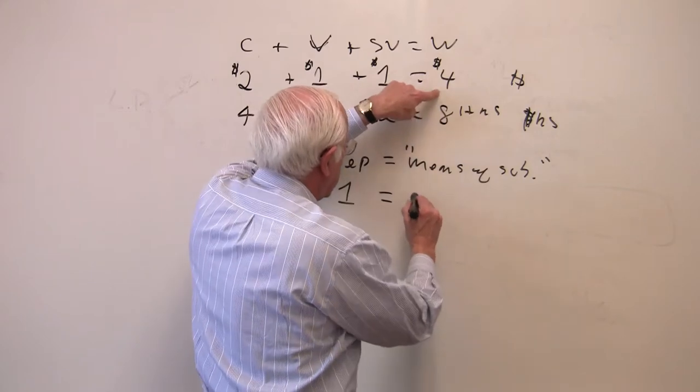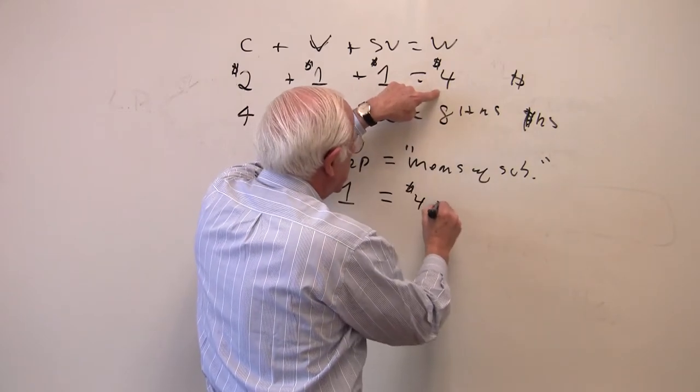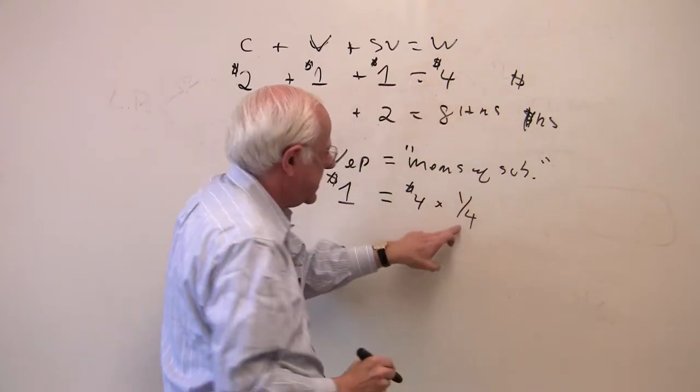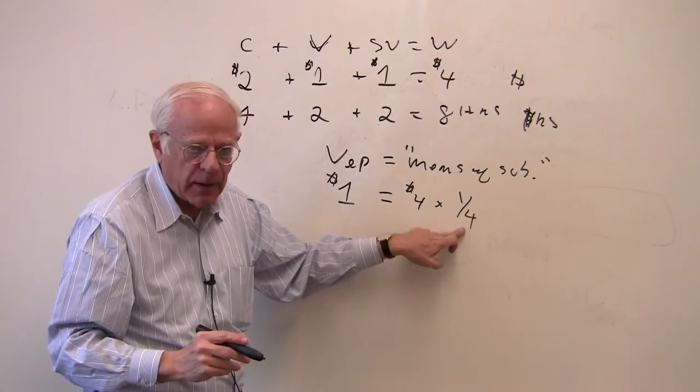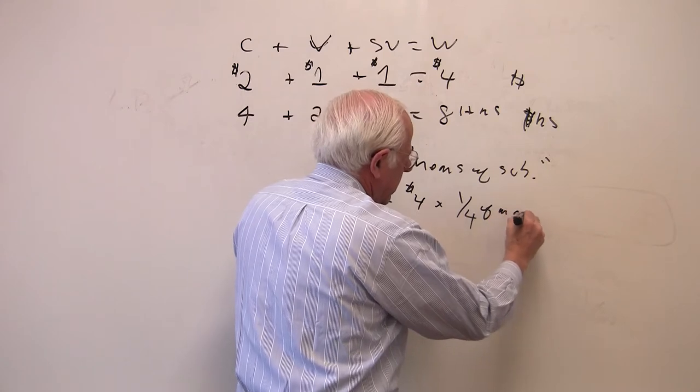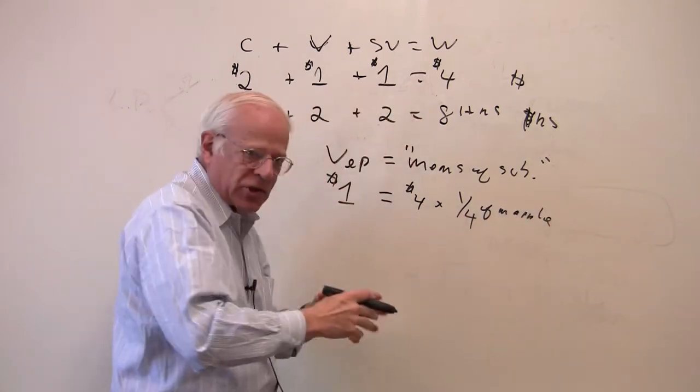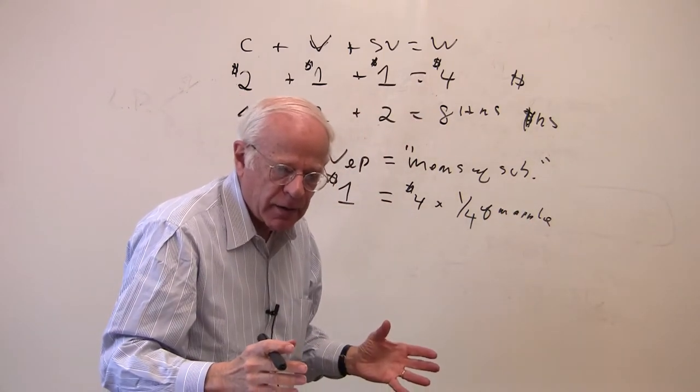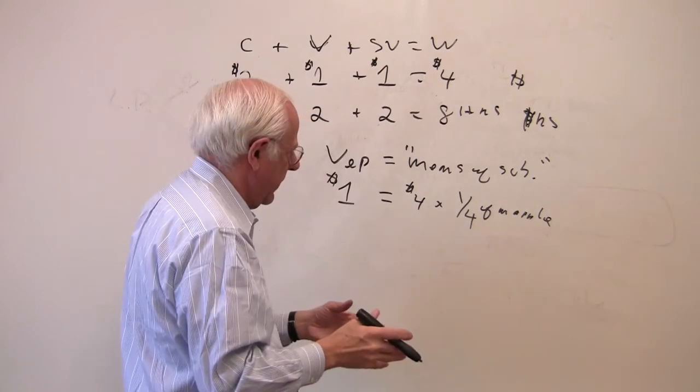Hence, the worker buys a quarter of an apple. And what we're assuming here is the quarter of an apple is what is socially required to reproduce the labor power.